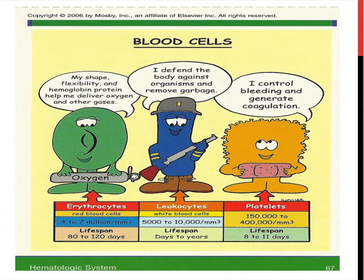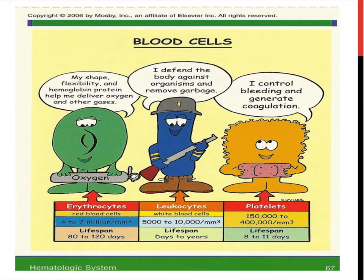When we talked about the immune system, we discussed what leukocytes or white blood cells do. The erythrocytes, also known as red blood cells, have hemoglobin on them, and that is what binds to oxygen and delivers it to the tissues. Platelets are the other piece of the blood component — they help to clot the blood. This slide shows all the typical normal values for each of these cells.